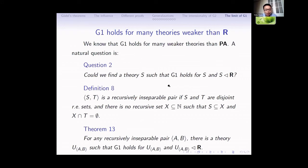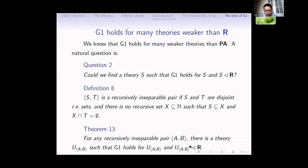Now let's look at weak theories within PA. We know that G1 holds for many weak theories in PA. A natural question is: we know G1 holds for R, so can we find a theory S such that G1 holds for S and S is weaker than R? For this, we introduce the notion of recursively inseparable pairs: a disjoint pair of sets such that there is no recursive set X that separates them. We can show that for any recursively inseparable pair (A,B), we can find a theory U(A,B) such that G1 holds for this theory and this theory is weaker than R. Since there are continuum-many recursively inseparable pairs, we have continuum-many instances of theories for which G1 holds and which are weaker than R.